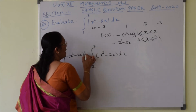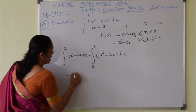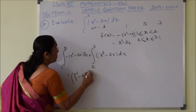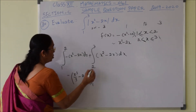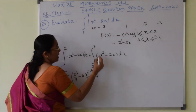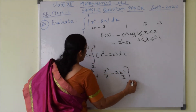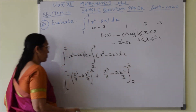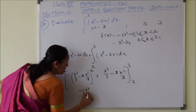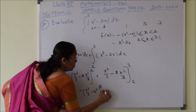Now let us evaluate. For the first part, the minus sign is outside: integrate x squared to get x cubed over 3, minus 2 times x squared over 2, with limits from 1 to 2. Simplifying (cancelling the 2s), this part becomes negative of (x cubed over 3 minus x squared) from 1 to 2.